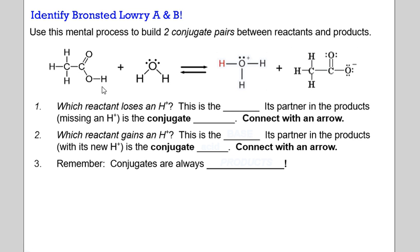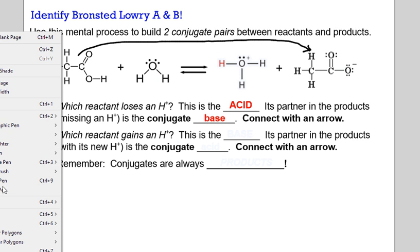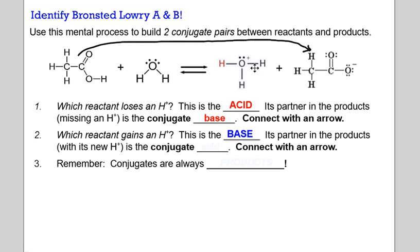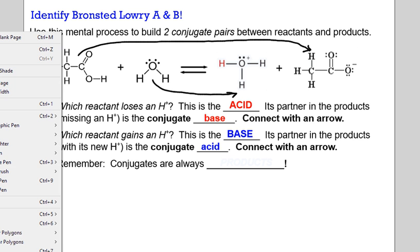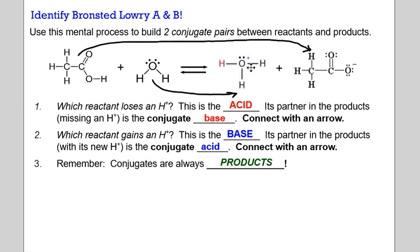Which reactant is losing a hydrogen? Whoever's losing a hydrogen is your acid. Its partner on the product side that it's become is our conjugate base. So let's connect those with an arrow to form a conjugate pair. This is a conjugate acid and base pair. Here we have water forming hydronium. This is the base. The hydronium is the conjugate acid because it now contains that hydrogen. Let's connect those with an arrow. Base to conjugate acid pair. What we see here is the flow of the hydrogen. It's gone from this species to this, forming a conjugate acid and conjugate base. Conjugates are always on the product side. As long as it's on the left, it's a reactant. If it's on the right, it's a product.